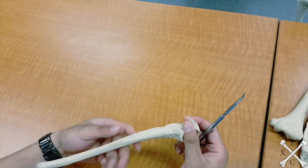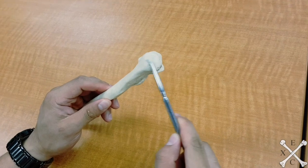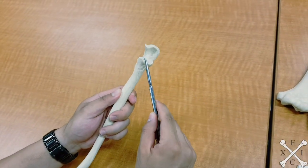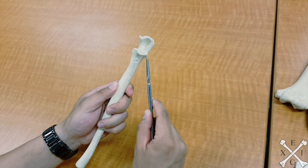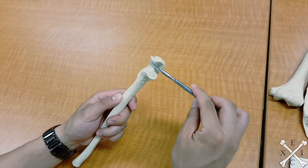Your coronoid process which is this part right here. You have your trochlear or semilunar notch which is this part right there.